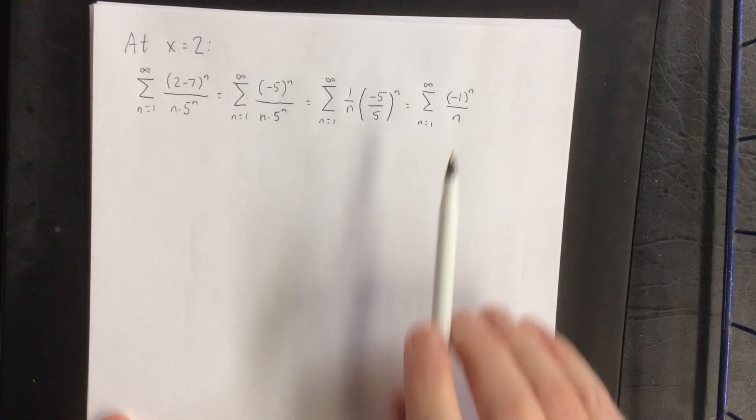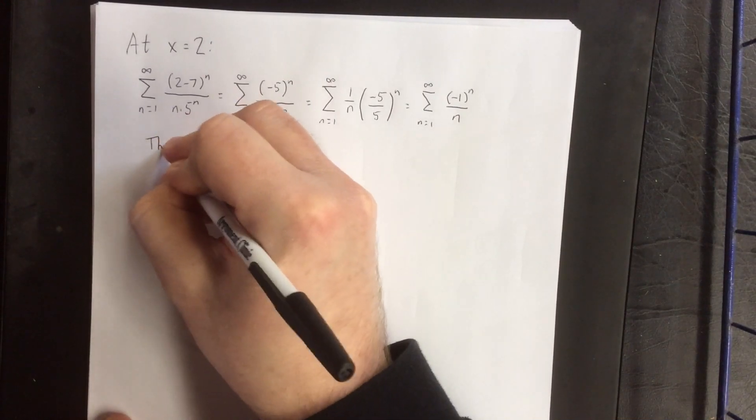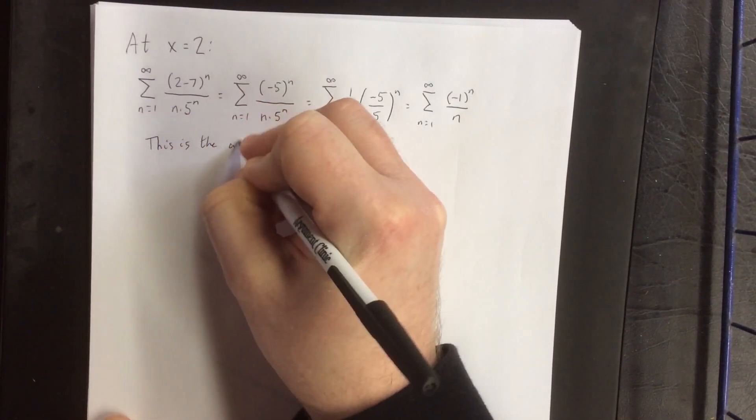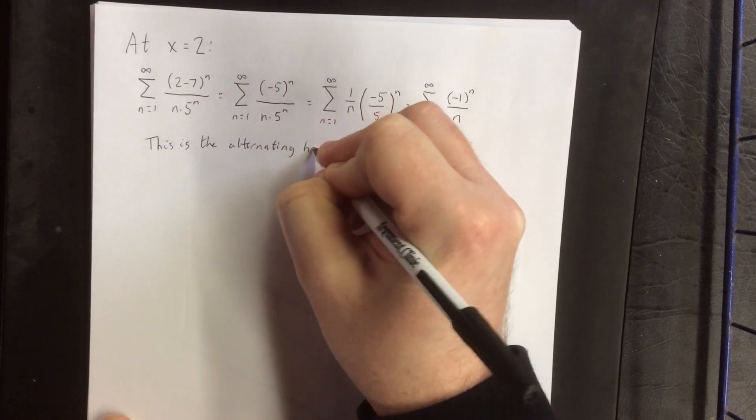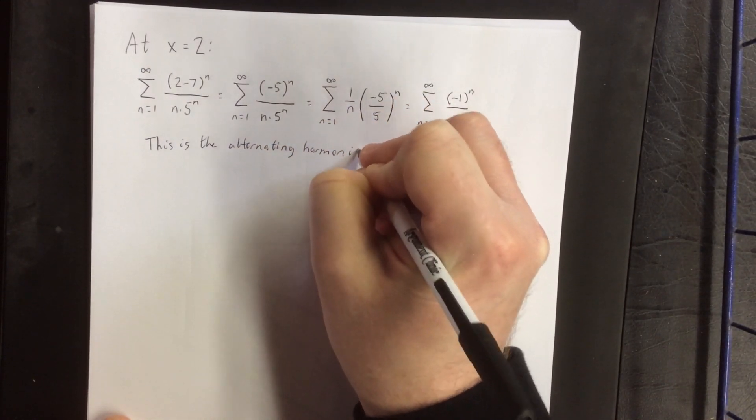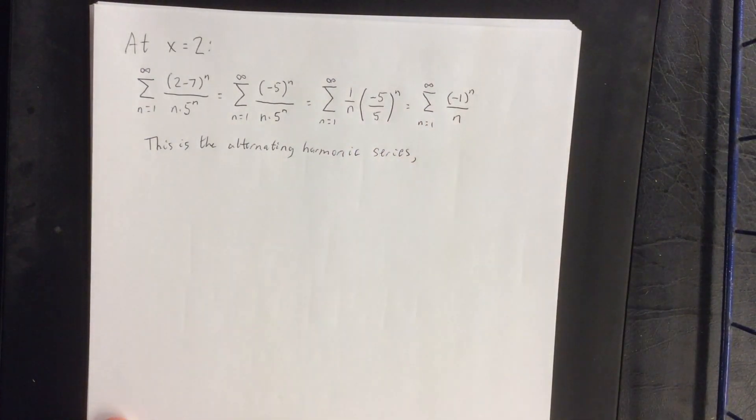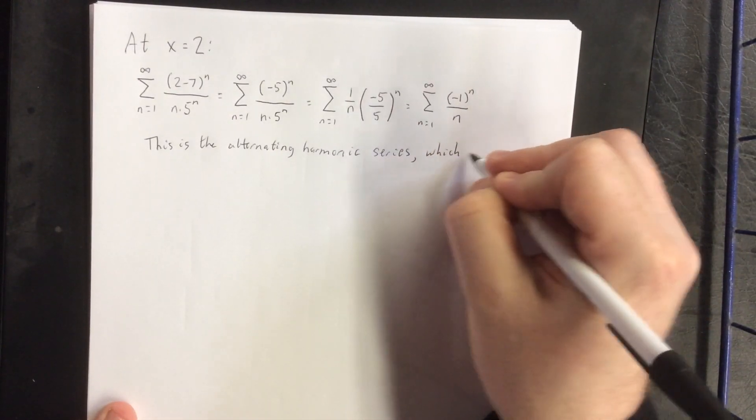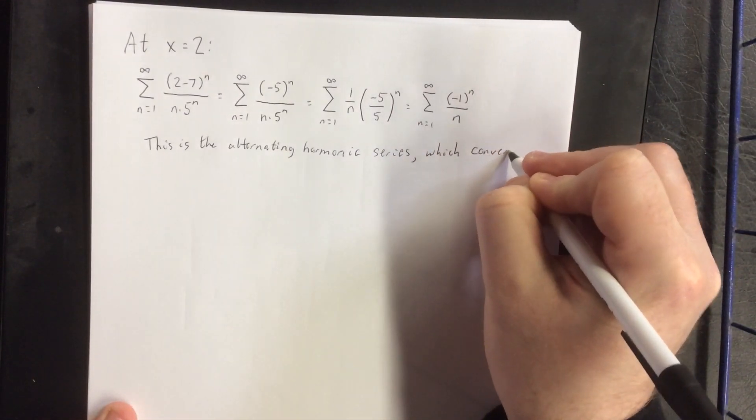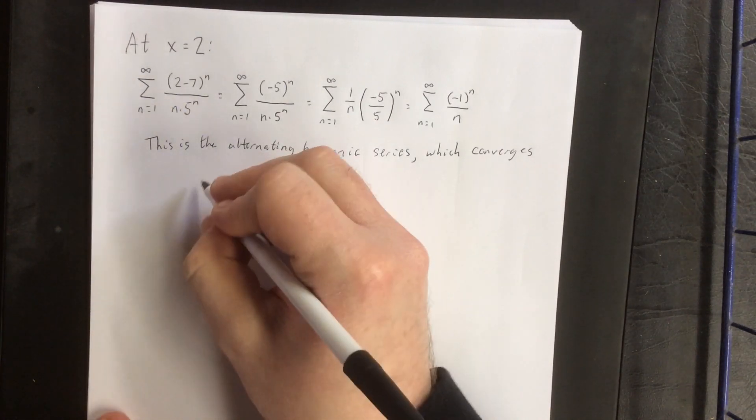Upon initial inspection, I see that what we have here is a version of the alternating harmonic series. From one of our initial examples in another video, we know that the alternating harmonic series converges. Therefore, x equals 2 will be included in the interval of convergence.